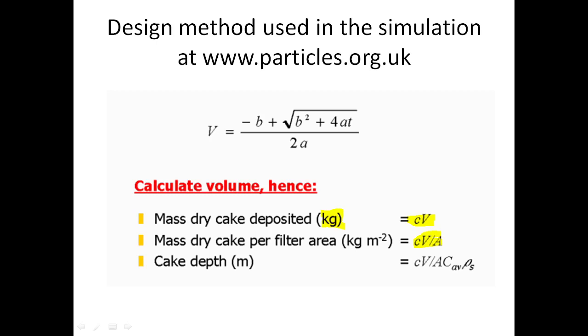And perhaps more interestingly, why would you want to calculate the dry cake mass per unit filter area? Well, it becomes very useful when you want to calculate the cake depth, because you just also divide by the average cake concentration, and the solid's density, because we need to convert from volume between volume and mass. Because we have the mass and we need the density to convert that to the volume. Divide by the area gives us the very important term for a lot of filtrations, how big the cake is going to be.